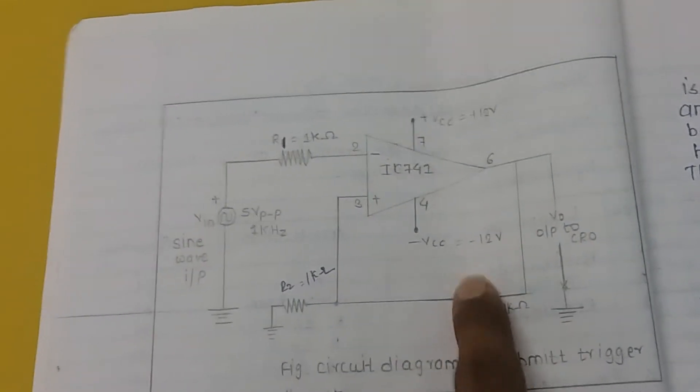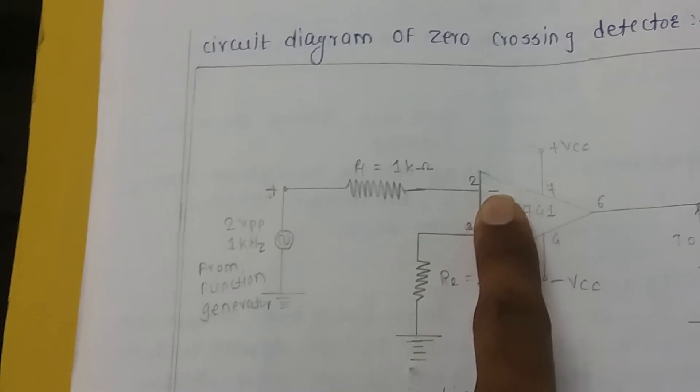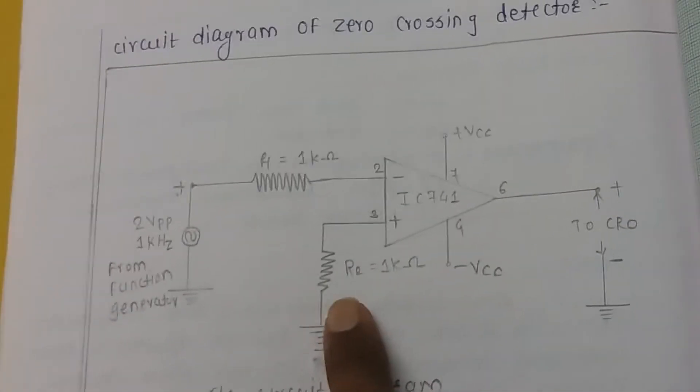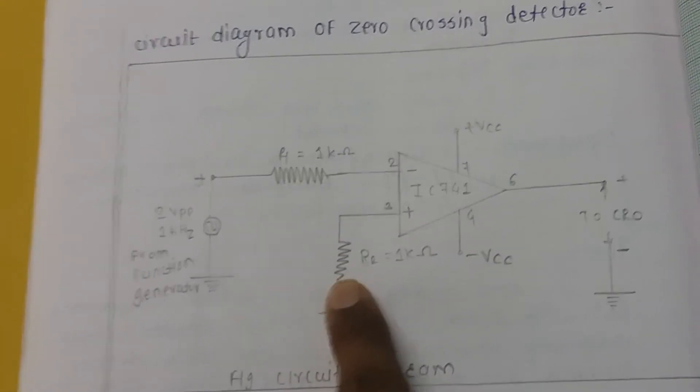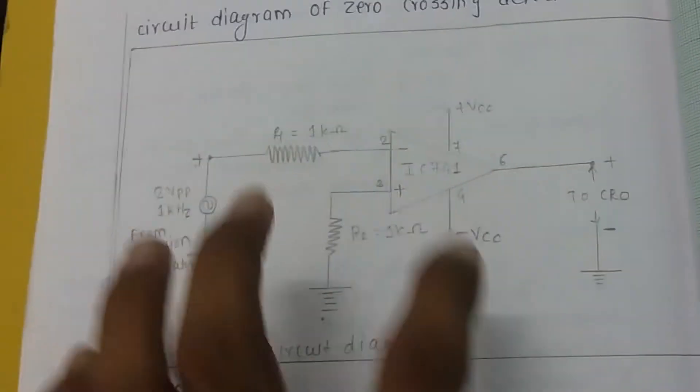Next is the zero crossing detector. The zero crossing detector uses the same circuit diagram as the Schmitt trigger, but you remove the feedback resistance. Once you remove that resistance, you get the zero crossing detector. With the resistance removed, it becomes an open loop system, and one application of the open loop op-amp is called the zero crossing detector.